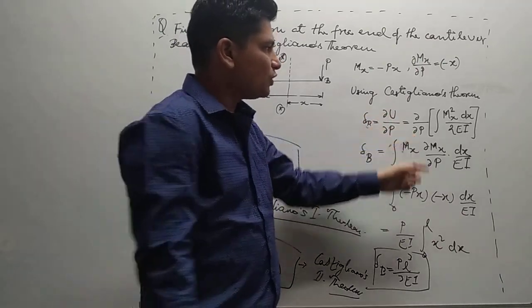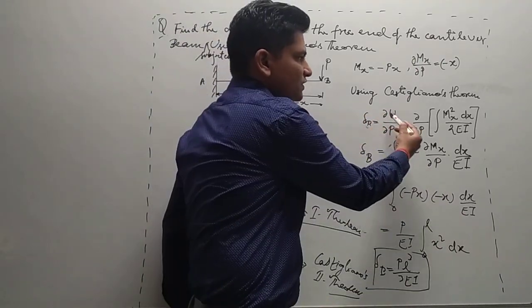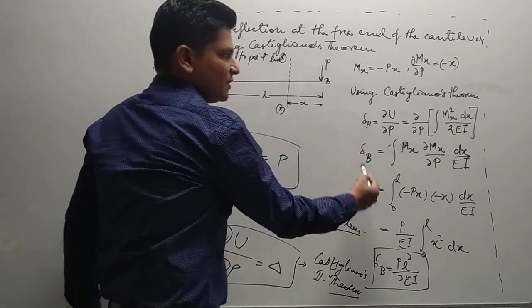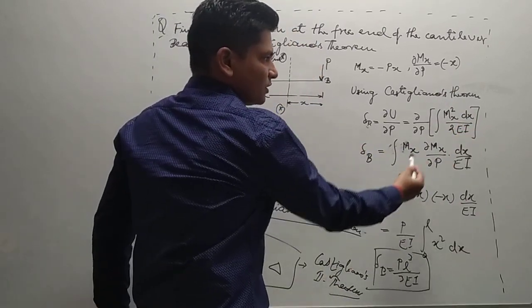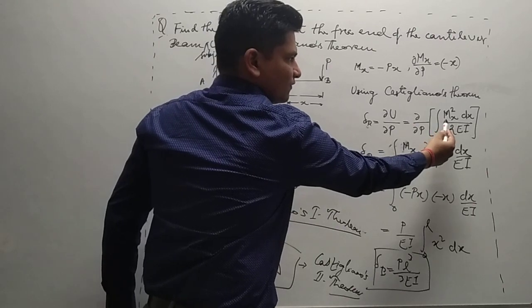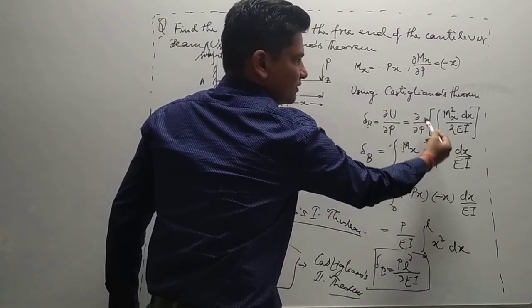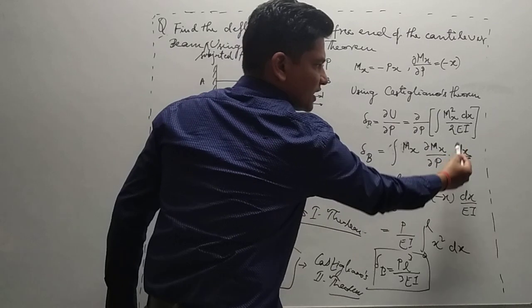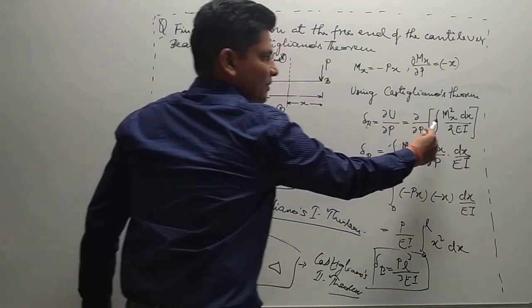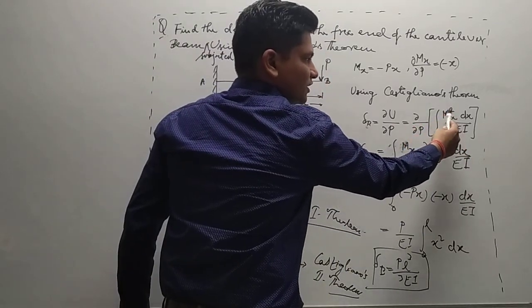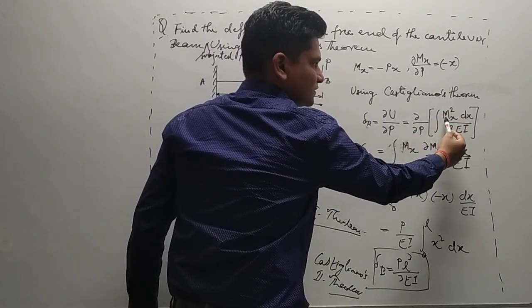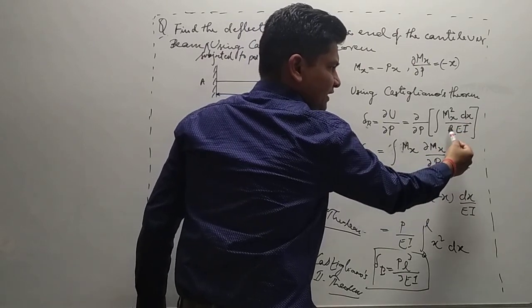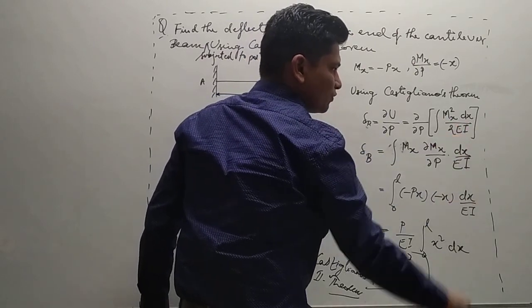So δU/δP equals the integral of Mx² dx upon 2EI. Therefore δ_B equals the integration of Mx times δMx/δP times dx upon EI. The Mx² differentiation gives 2Mx · δMx/δP, and the 2 and 2 cancel out, leaving dx upon EI.